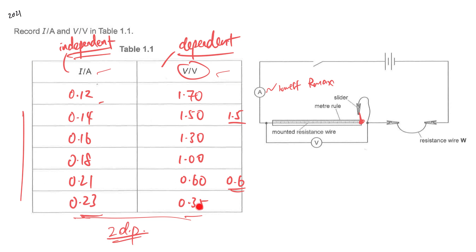If the table is not given to you, you are supposed to draw it out correctly in a vertical format, using rulers and a pencil. The important thing is the header — the header is the physical quantity, followed by a slash, followed by the units of the physical quantity. The units go in the header, so in the body of the table you should not write units. If you accidentally put, for example, 'A' for ampere in the body, marks will be deducted.